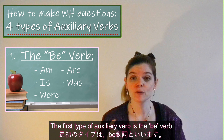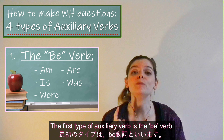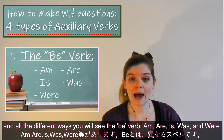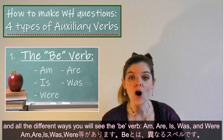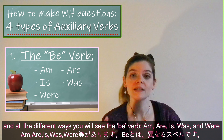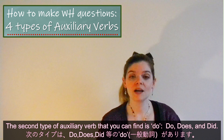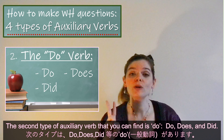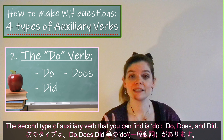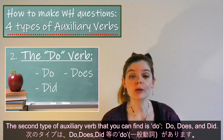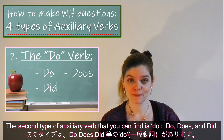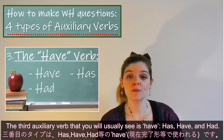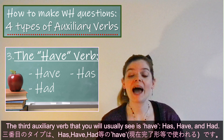The first type of auxiliary verb is the be verb, and all of the different ways you will see it: am, are, is, was, were. The second type of auxiliary verb is do: do, does, and did.